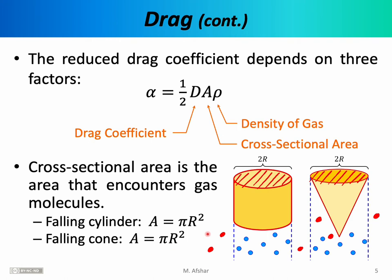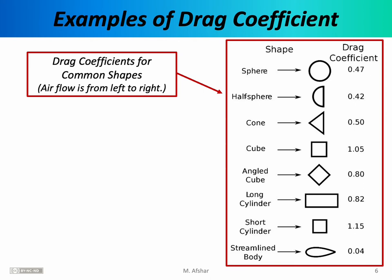You might think the cone is more aerodynamic because of its sharp point, so what distinguishes the cylinder from the cone? The answer is the drag coefficient D. Although both have the same cross-sectional area, the drag coefficient for the cylinder is larger. When we talk about a shape being aerodynamic, we're often talking about the drag coefficient. If an object is highly aerodynamic, its drag coefficient D is a small number; if it's blocky and non-aerodynamic, its drag coefficient is a large number.